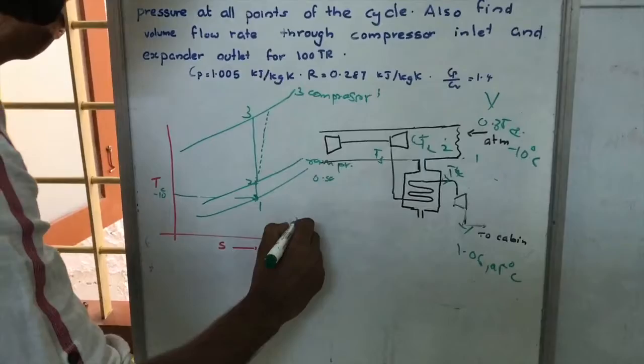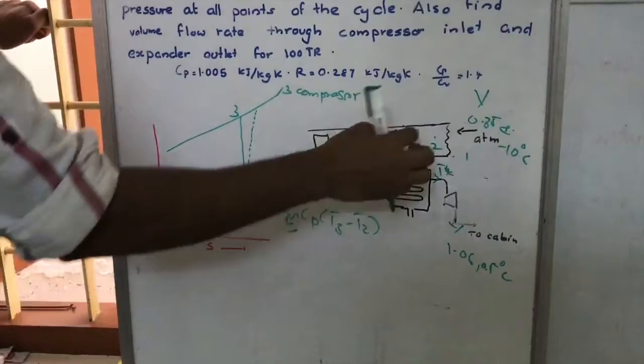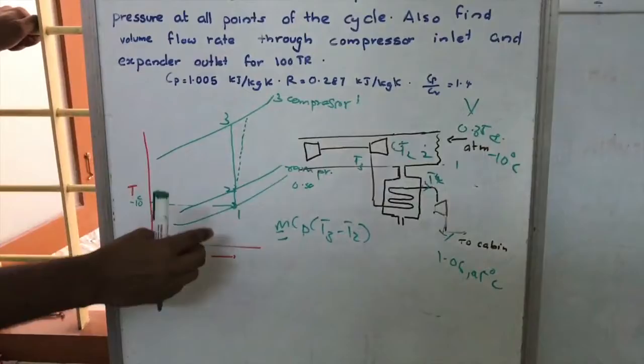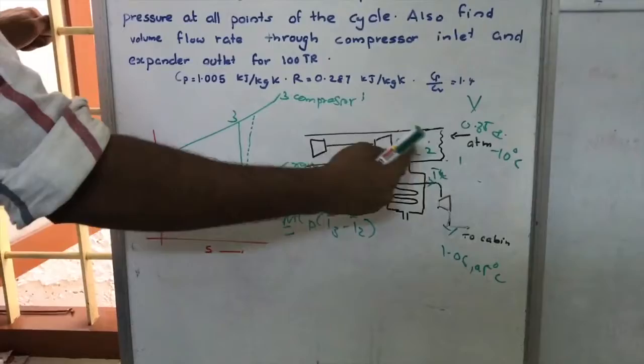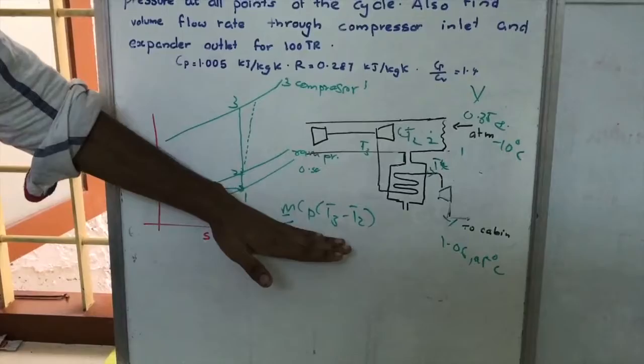The work done in the compressor is M·Cp·(T3 - T2). This is the work that has to be done for ideal compression. T3 minus T2 represents the temperature difference across the compressor, and T2 remains the same at the inlet.